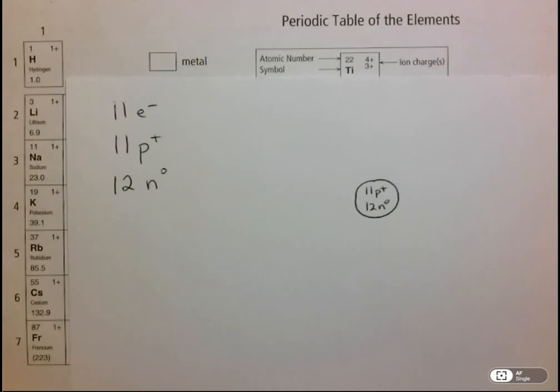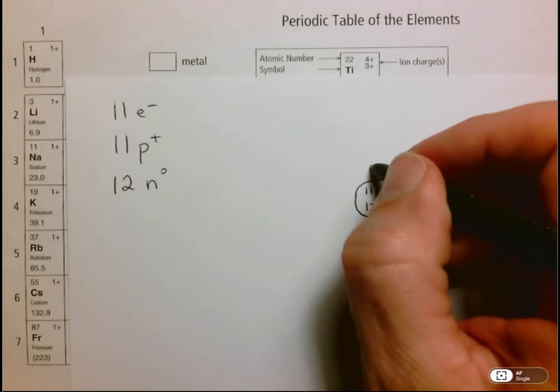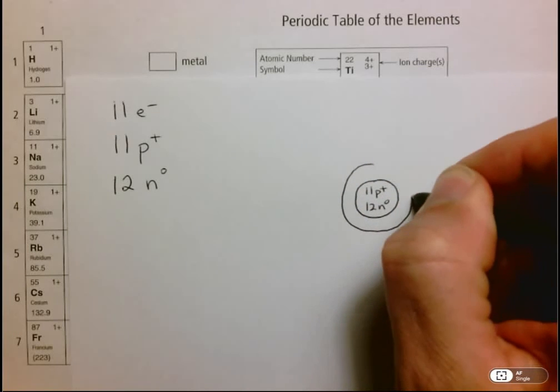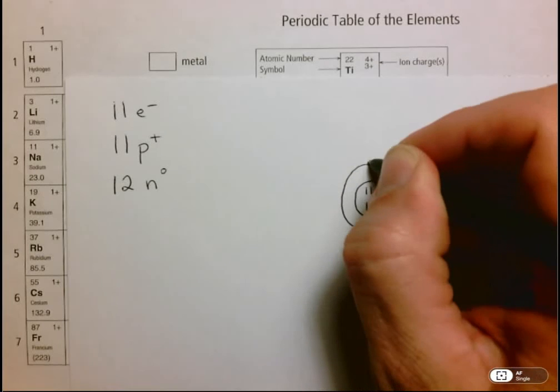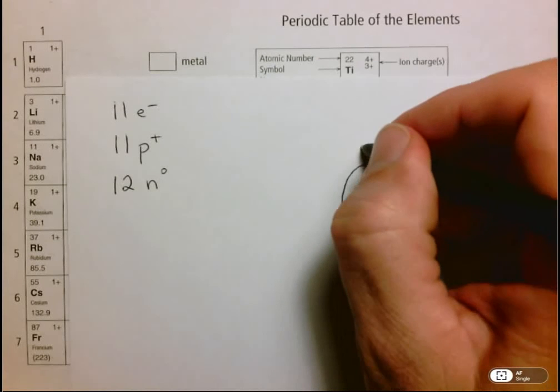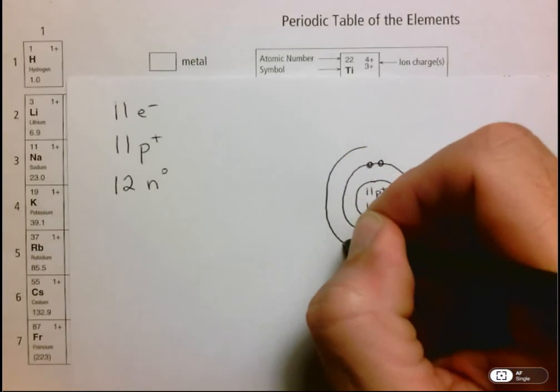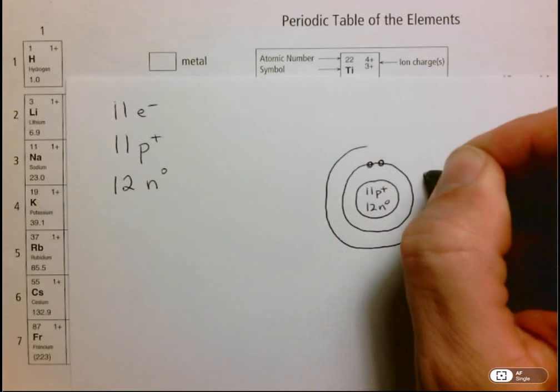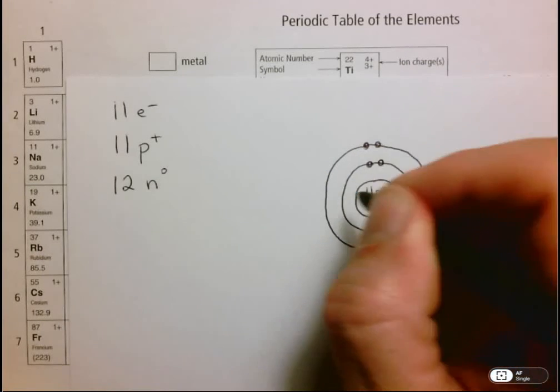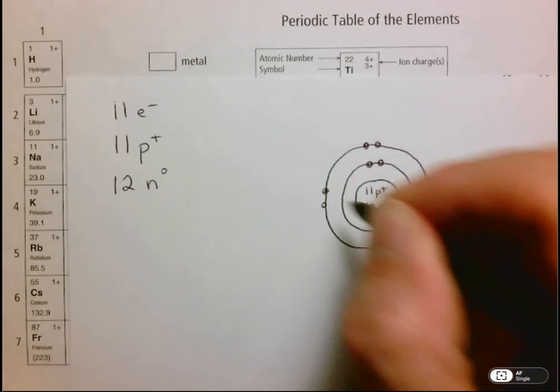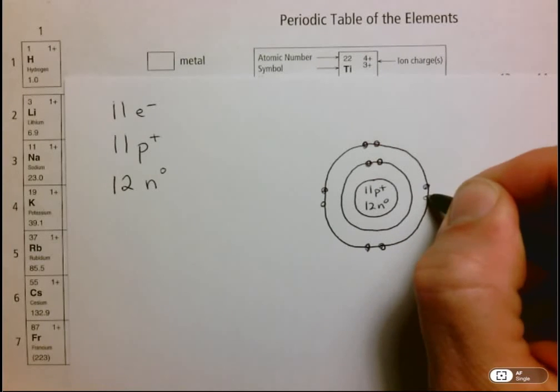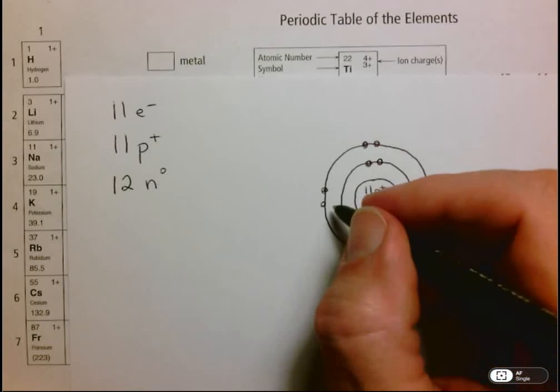Now we start drawing our electron shells. The first electron shell can hold a maximum of two electrons, so one and two. We go to our second electron shell, which can hold a maximum of 8: 1, 2, 3, 4, 5, 6, 7, 8. So we've got 2 and 8, 10 in all so far, but we need 11.